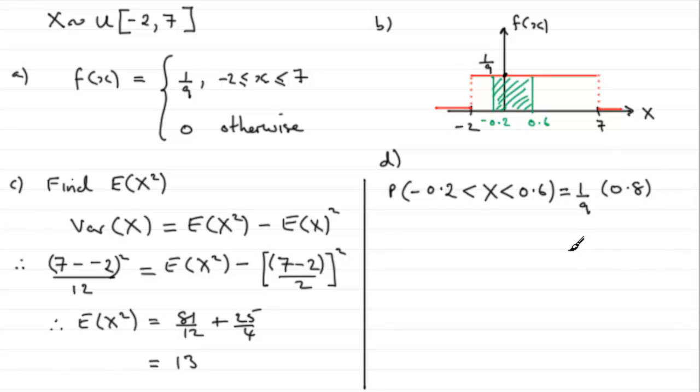So 1/9 times 0.8 gives you 8/90 as a fraction, or you could reduce that down to 4/45.